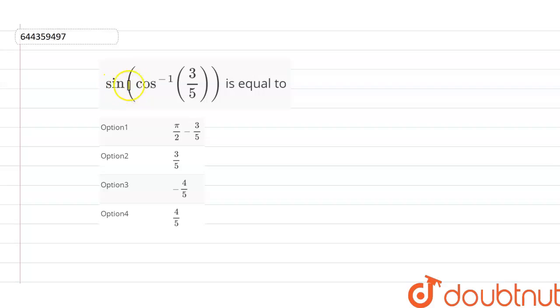Hello guys, we have sin(cos^(-1)(3/5)) is equal to. In this question, we need to convert this cos inverse into sin.